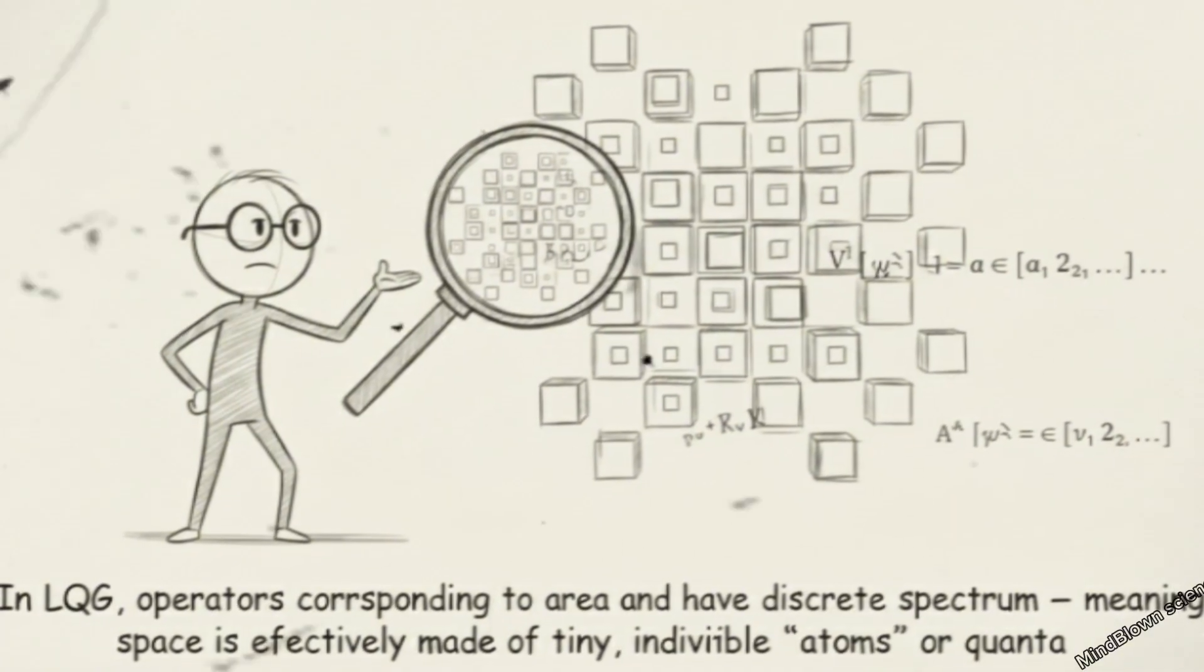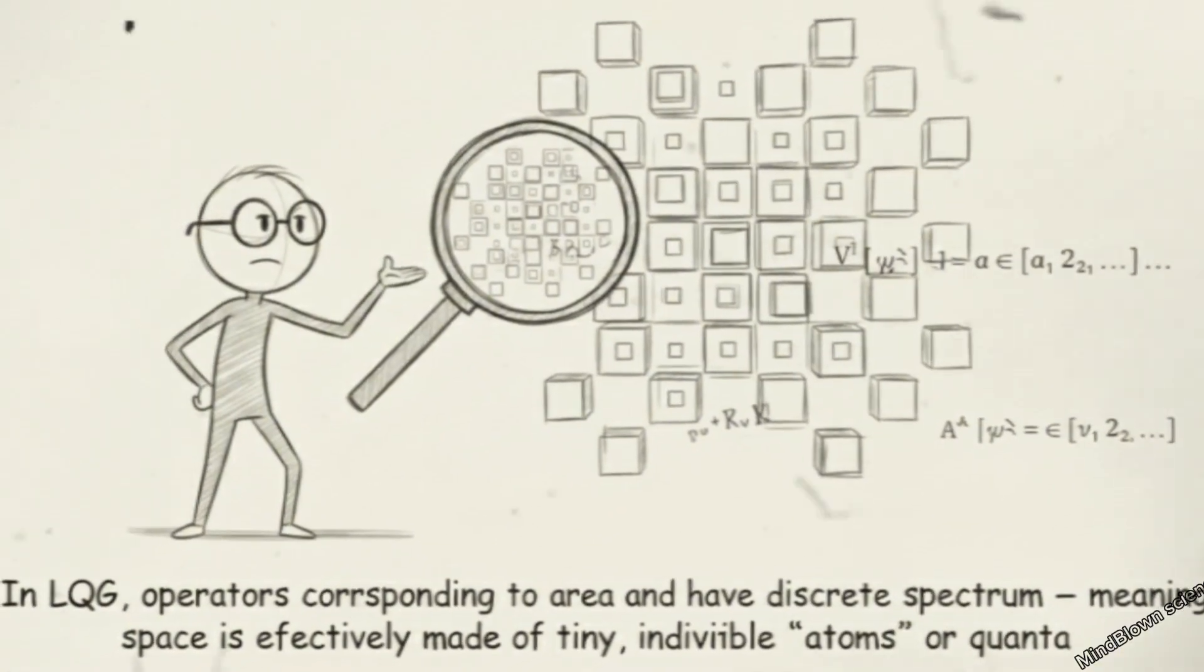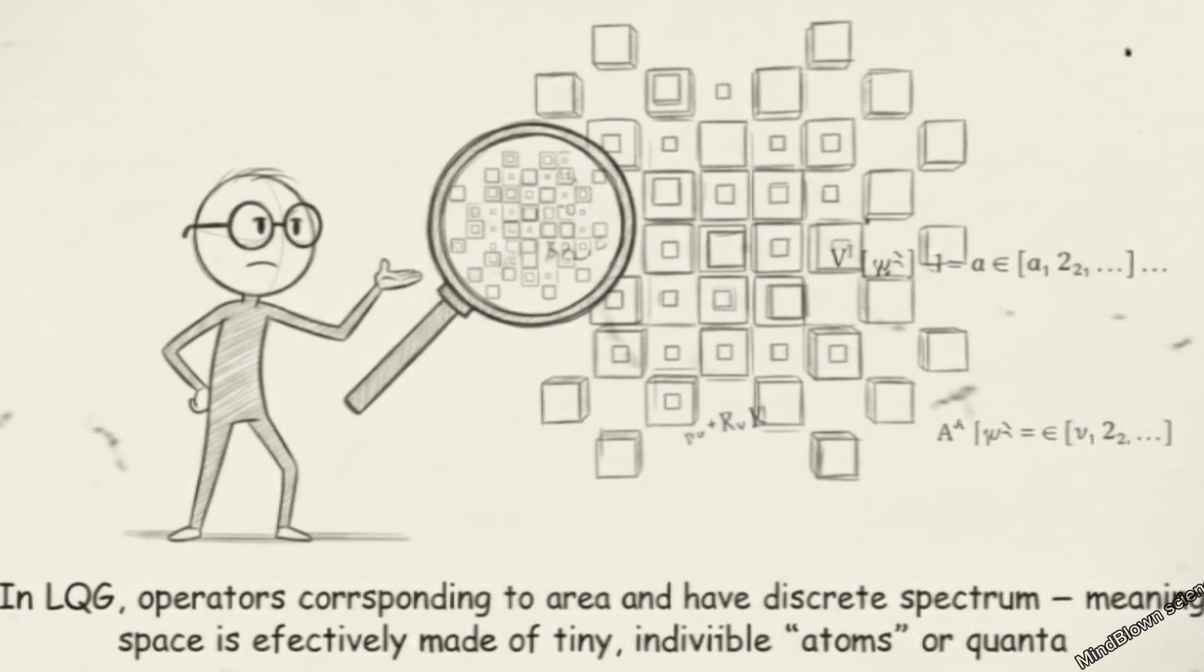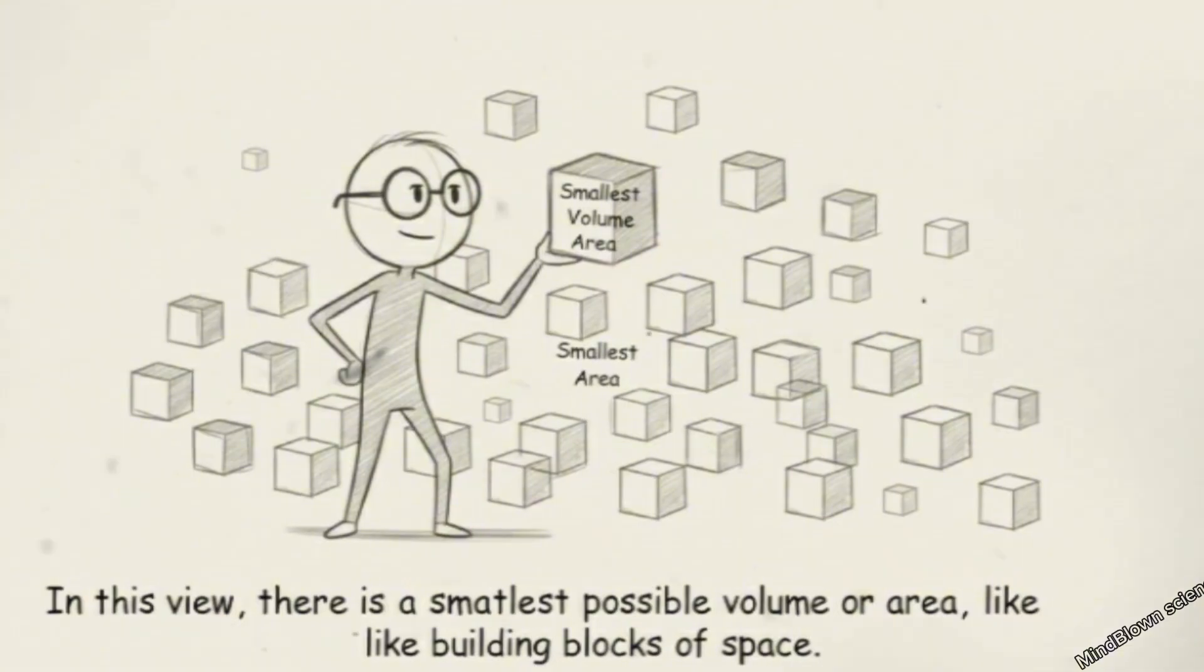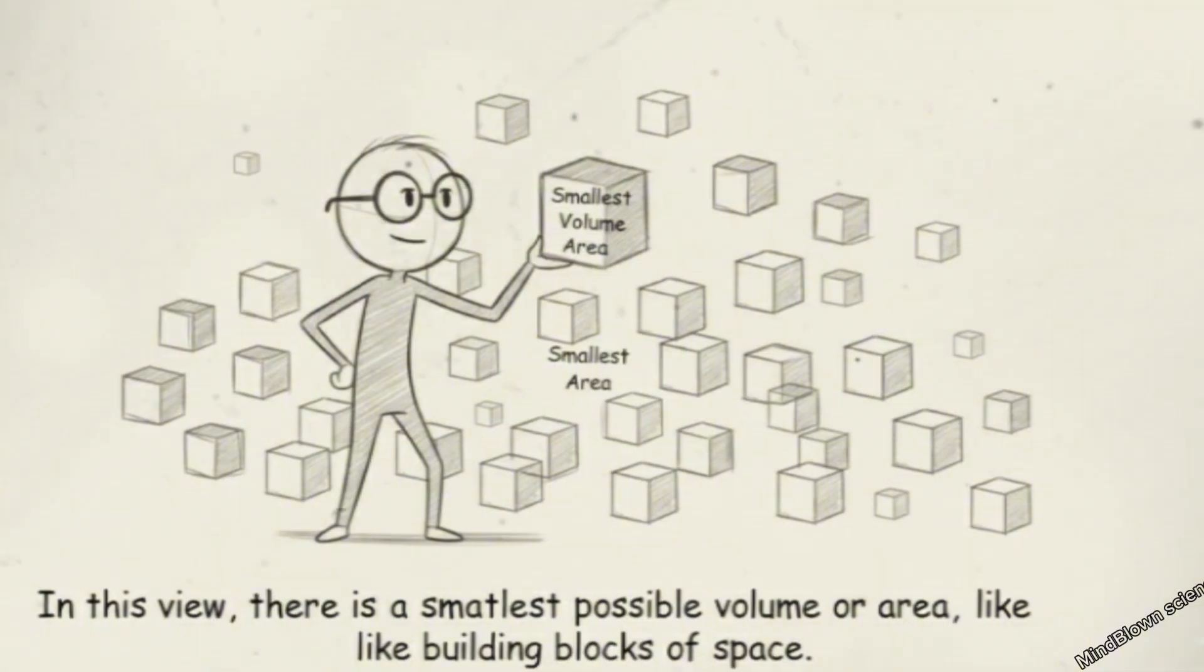In LQG, operators corresponding to area and volume have a discrete spectrum, meaning space is effectively made of tiny, indivisible atoms or quanta. In this view, there is a smallest possible volume or area, like building blocks of space.